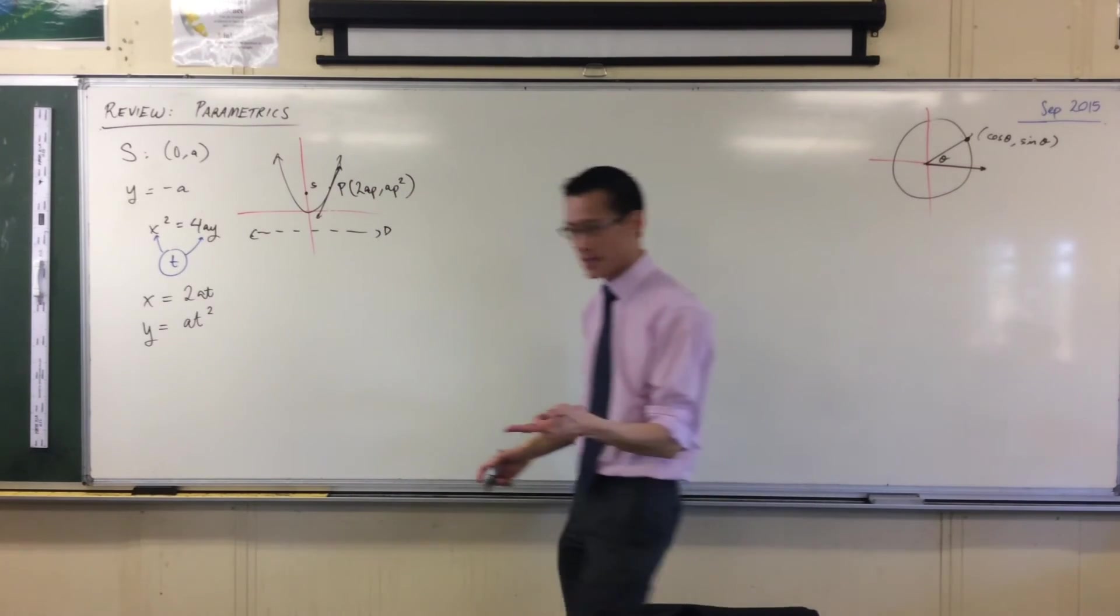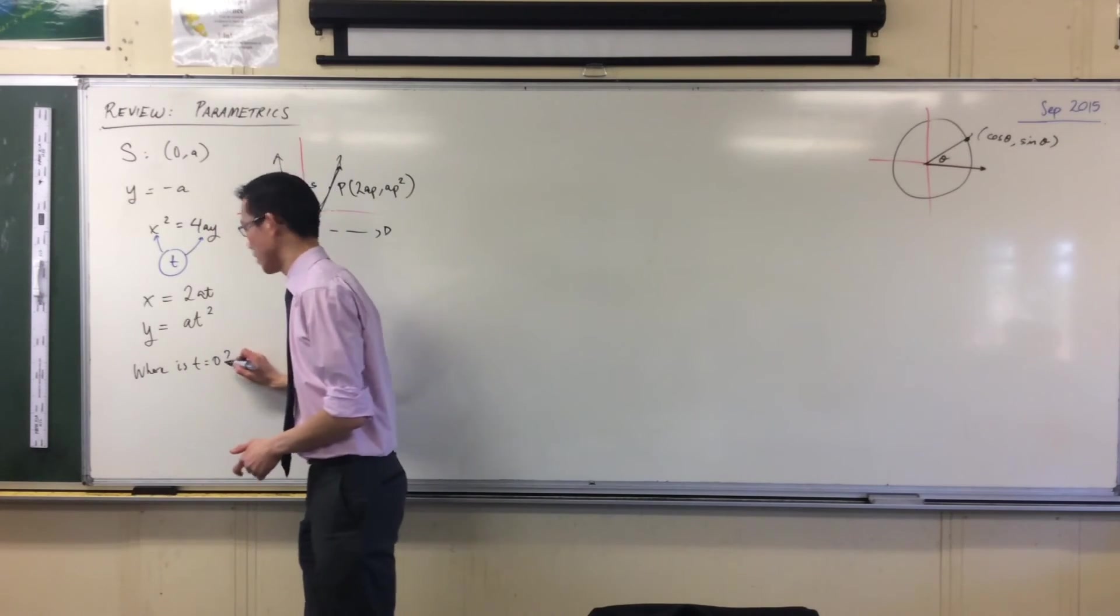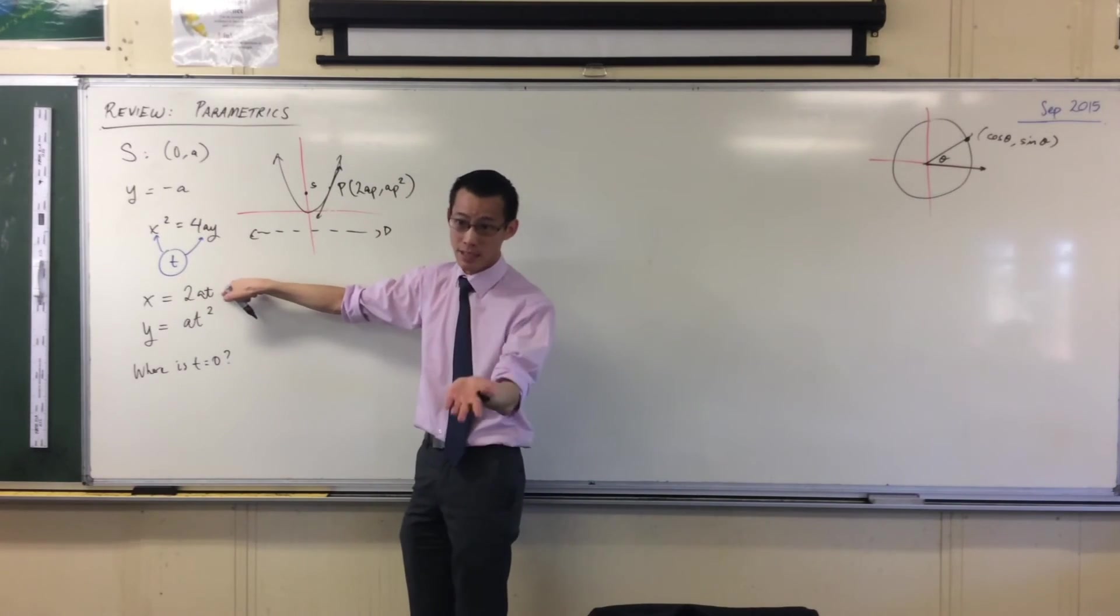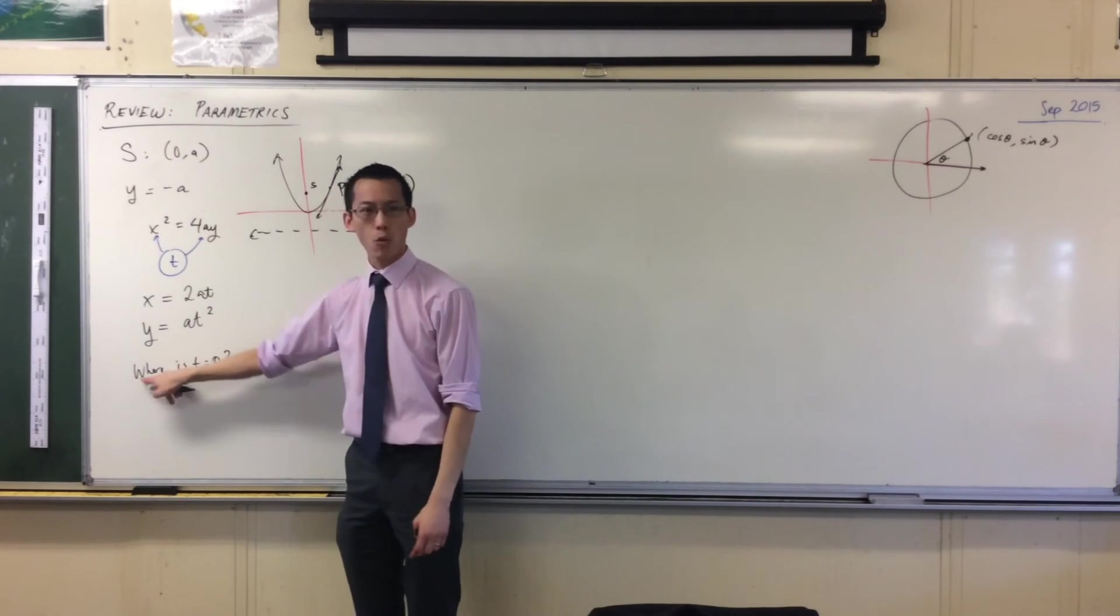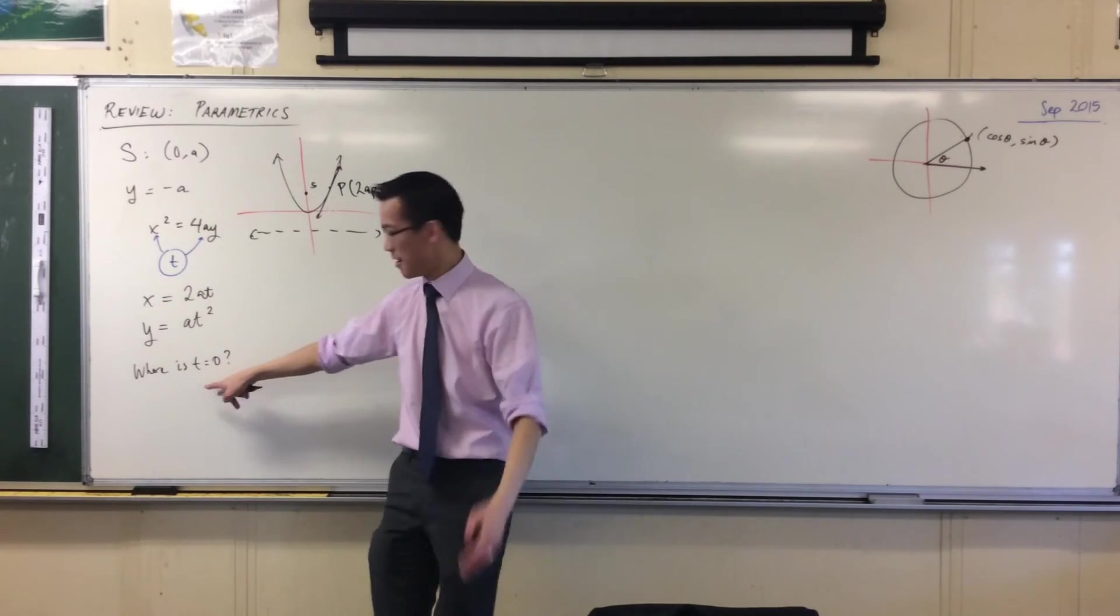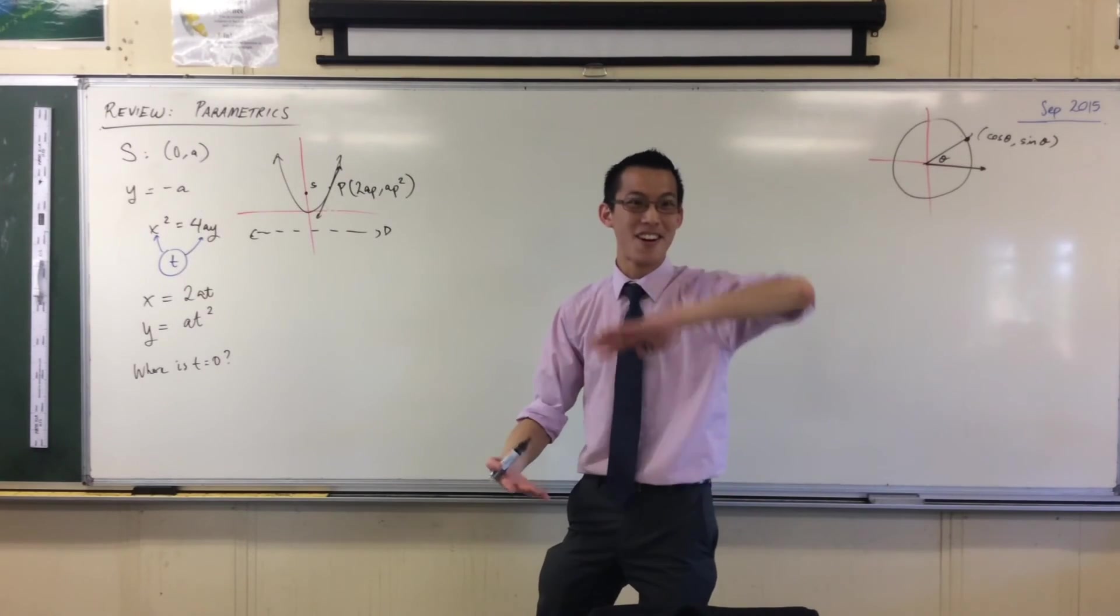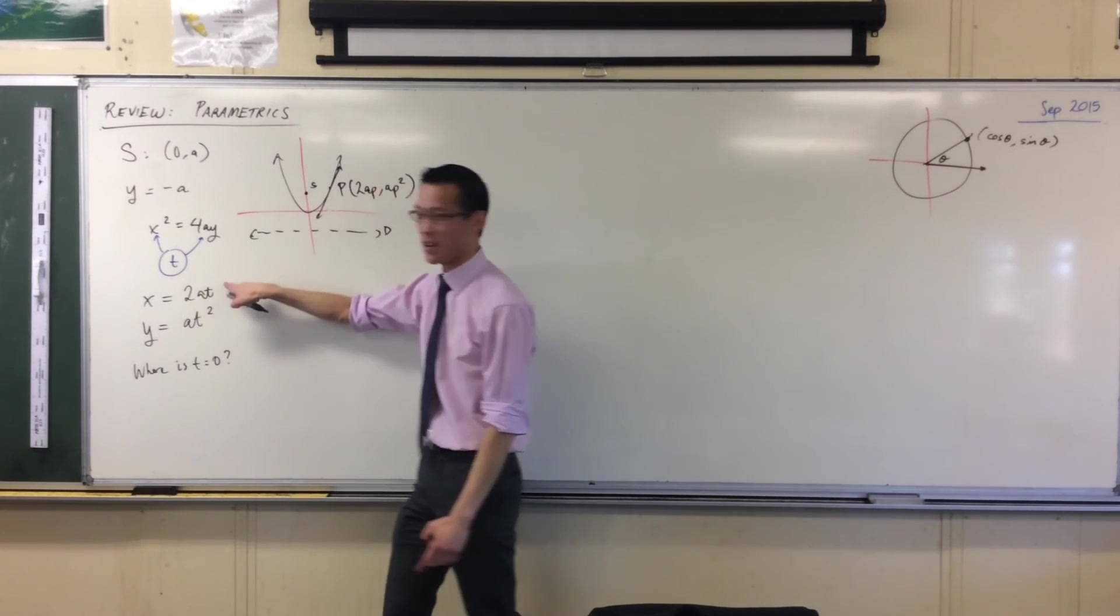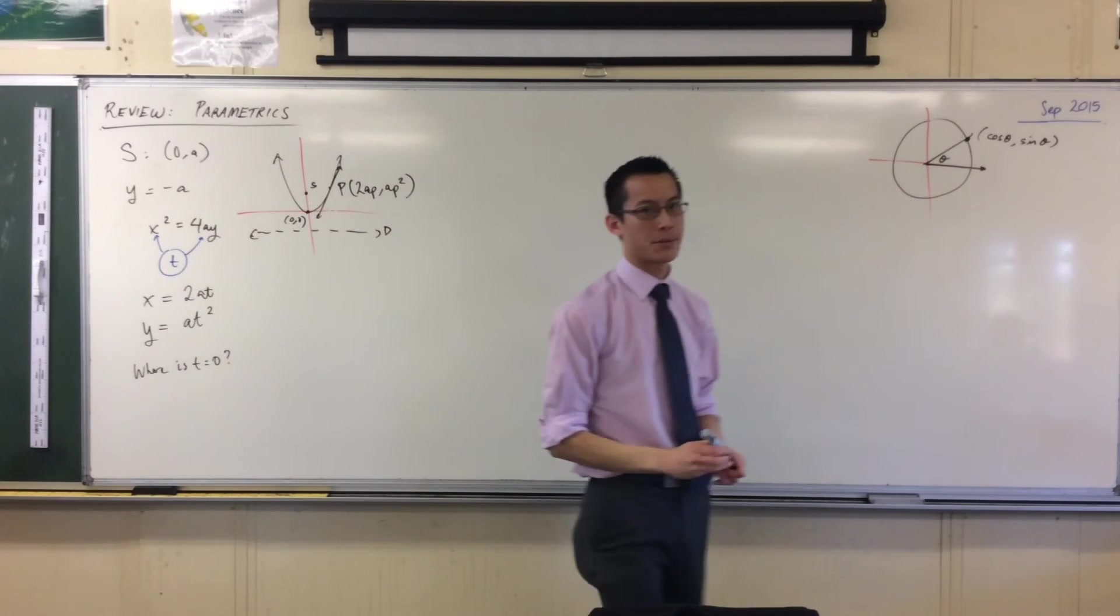For instance, if I say where is t equal to zero? Now just pause. You can put it in, put all of that into the coordinates and you'll get a very easy point out. But you don't need to think about it in terms of chucking the values in there. You can think about it in terms of where is the gradient of the tangent. That's what t is. When is that equal to zero? What does zero mean as a gradient? It means a horizontal line, which takes place at the vertex, which is why when you put t equals zero in here you get zero, zero, which of course is where the gradient is.